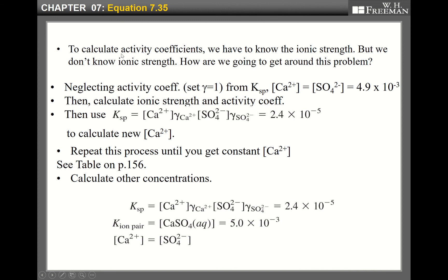To calculate activity coefficients, we need to know the ionic strength — but we don't know the ionic strength. To calculate the equilibrium constant, we need ionic strength, and then we apply Debye-Hückel theory or interpolate from a table. Since we don't know ionic strength, we need an initial guess. The first initial guess is to neglect the activity coefficients — set gamma equals 1. Starting from Ksp and ignoring activity coefficients, we can very easily calculate the calcium and sulfate ion concentration, which is 4.9 times 10 to the minus 3 molar.